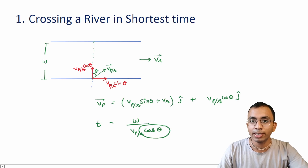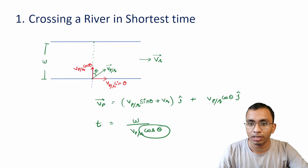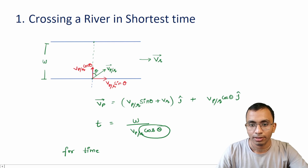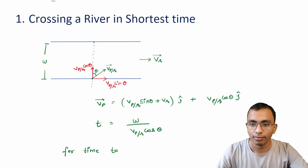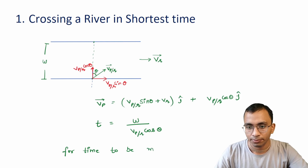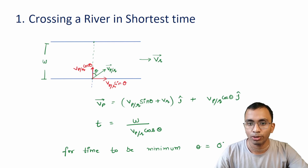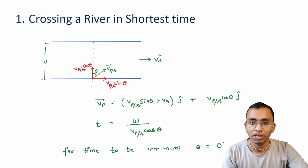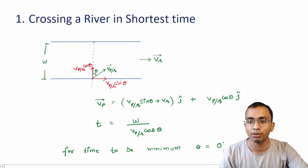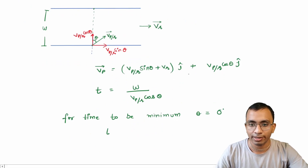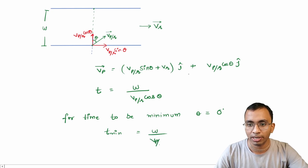For minimum time, theta should be equal to 0, because when θ = 0, cos θ = 1, which gives the minimum value of t. So t_minimum = width / velocity of person with respect to river.